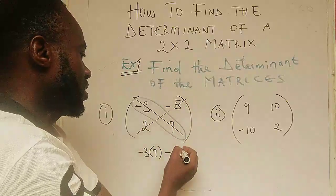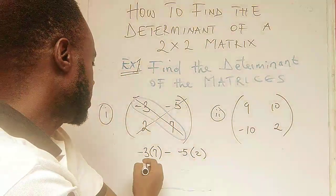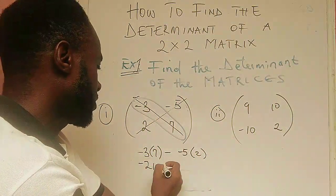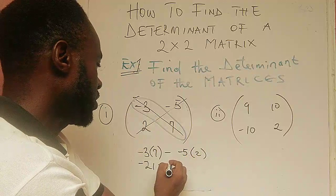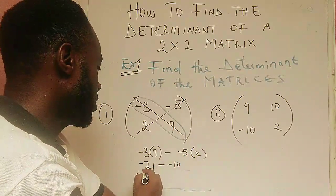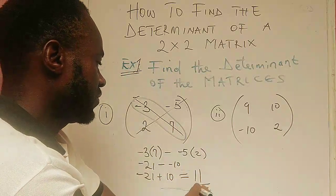Then we subtract the minor diagonal, which is -5 times 2. This gives me -10. So we are actually having -21 minus -10, which is -21 plus 10. So our answer to this is -11.